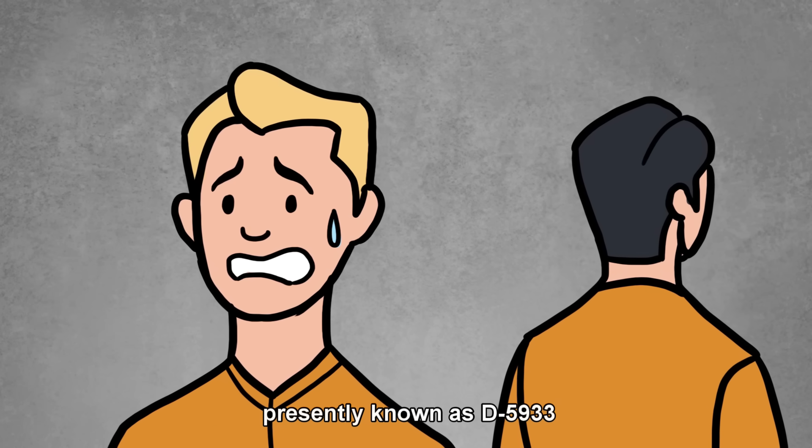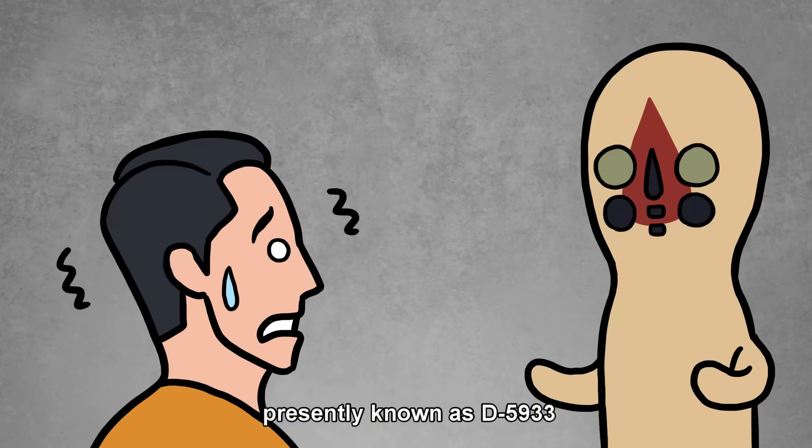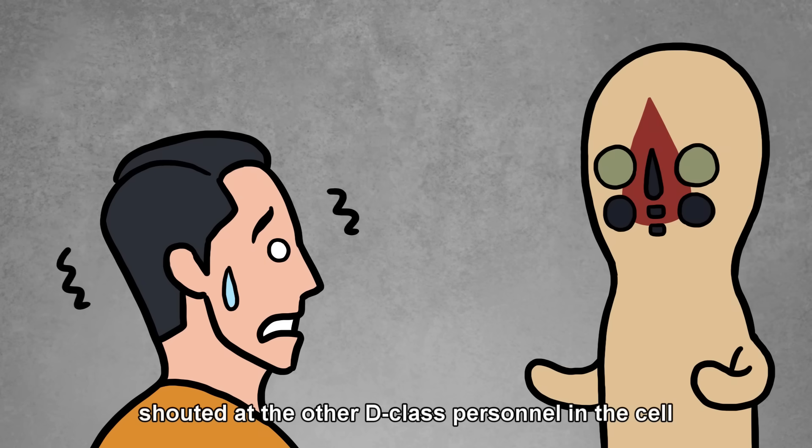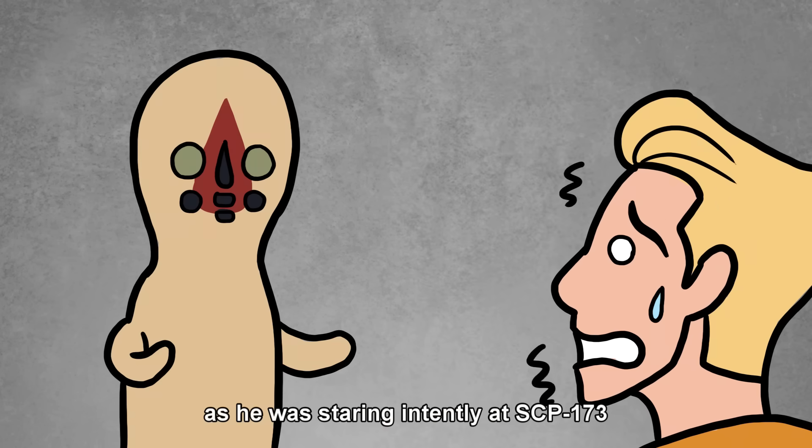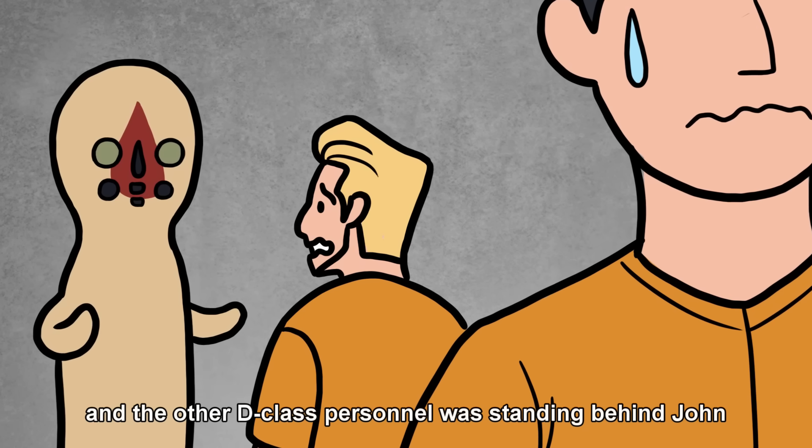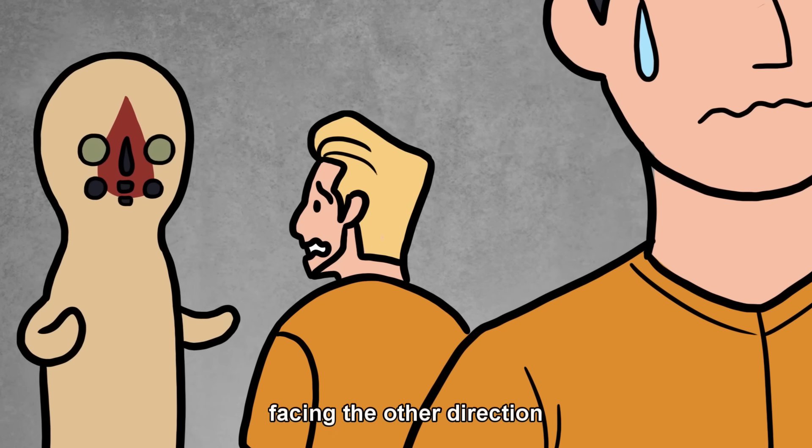John Avery, presently known as D-5933, shouted at the other D-class personnel in the cell. SCP-173, what are you looking at? came the reply. This worried John, as he was staring intently at SCP-173, and the other D-class personnel was standing behind John, facing the other direction.